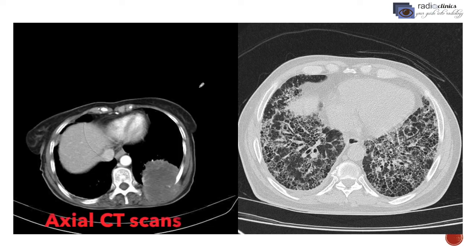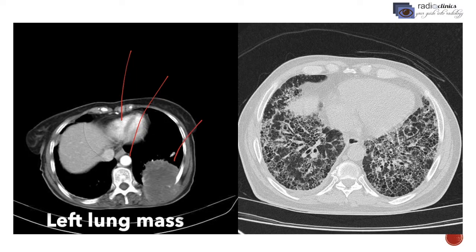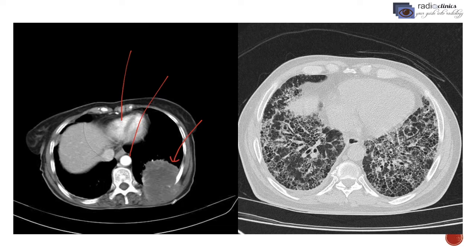Now these are the axial CT scans of the patients with similar diseases as the X-rays. In the first scan, contrast is being given, so the heart and the aorta appear bright. We can see there is presence of a mass in the posterior aspect of the left lung, and this mass has extended beyond the lungs into the chest wall — information that would not have been obtained with an HRCT.